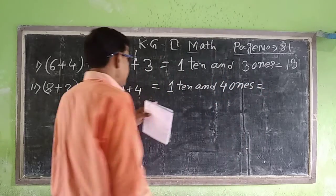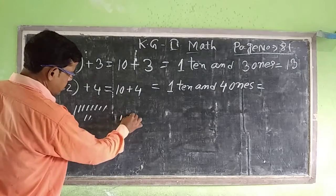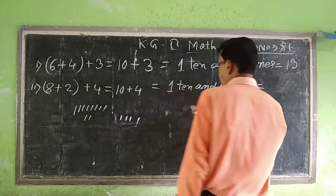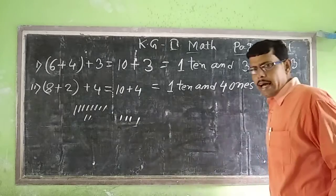10 plus 4. This is equal to 10, 1 ten and 4 ones. Now, 10 plus 4 is equal to 10. Counting: 1, 2, 3, 4, 5, 6, 7, 8, 9, 10 plus 4 is equal to 14. Clear.